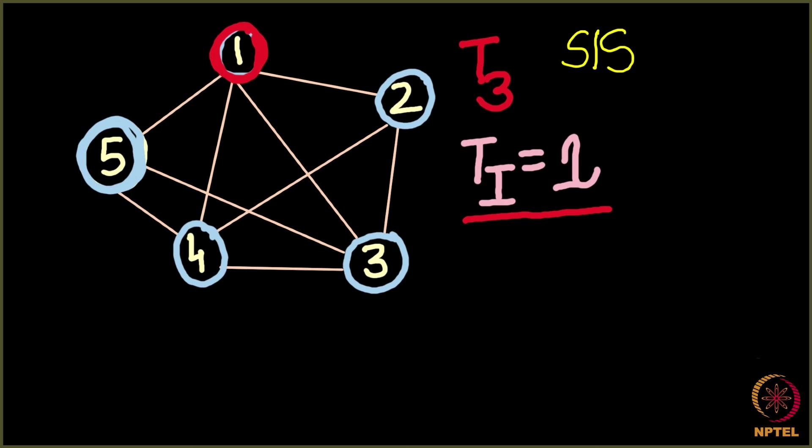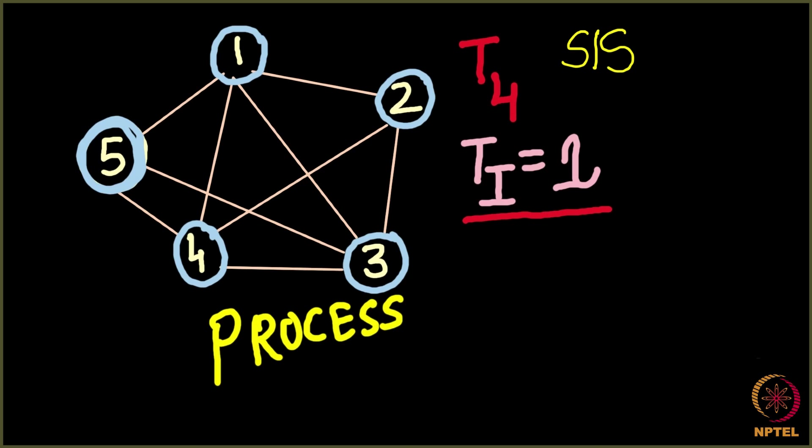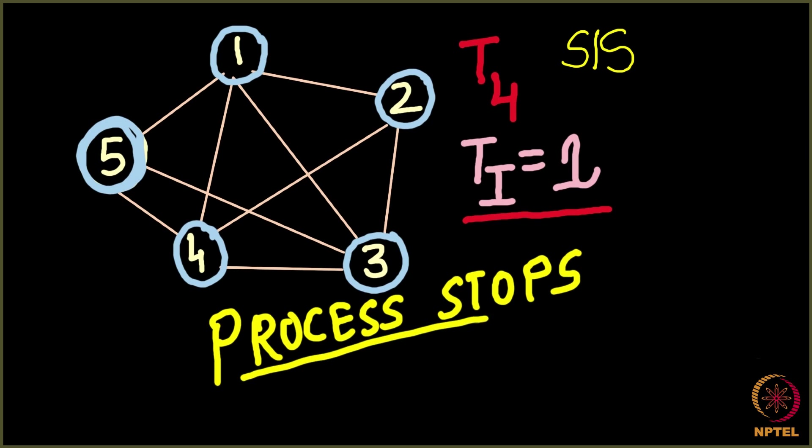This process keeps on going — node 1 may infect certain nodes, and those nodes infect others in turn. But suppose on day 4, node 1 is unable to infect anybody. Towards the end of day 4, node 1 again goes back to the susceptible state. Now everybody in the network is susceptible and there is not a single infected node. As soon as this happens, the process stops. This was the simulation of the SIS model on a network.